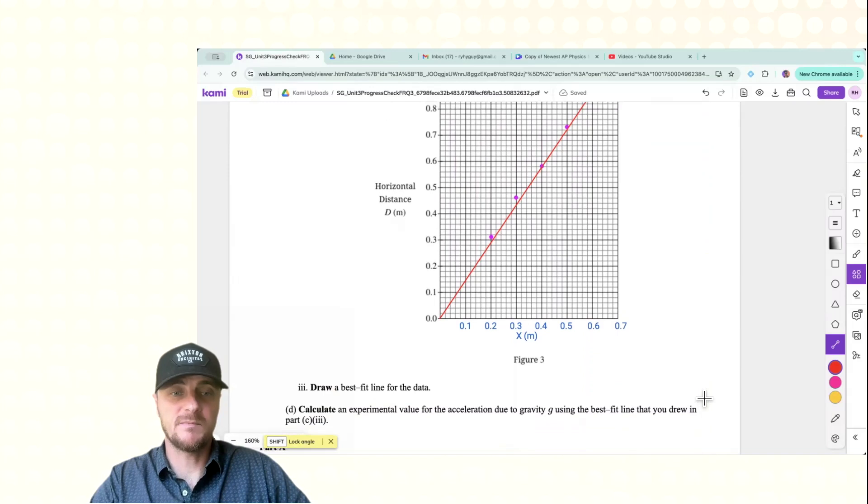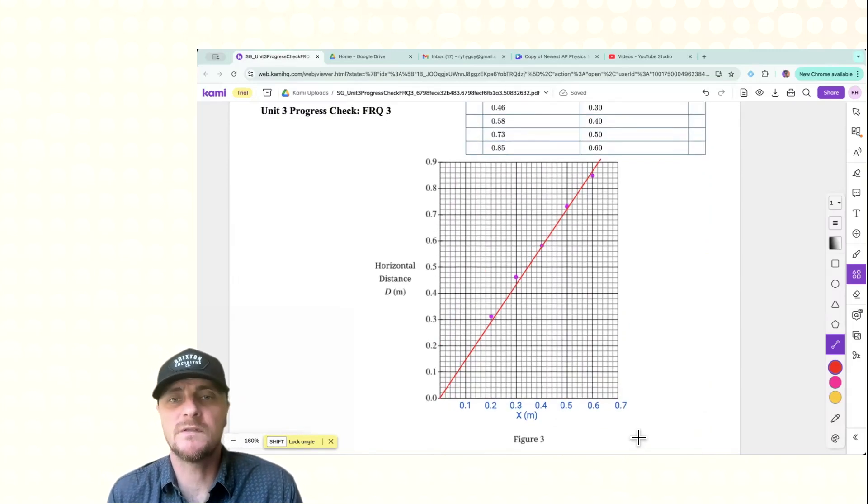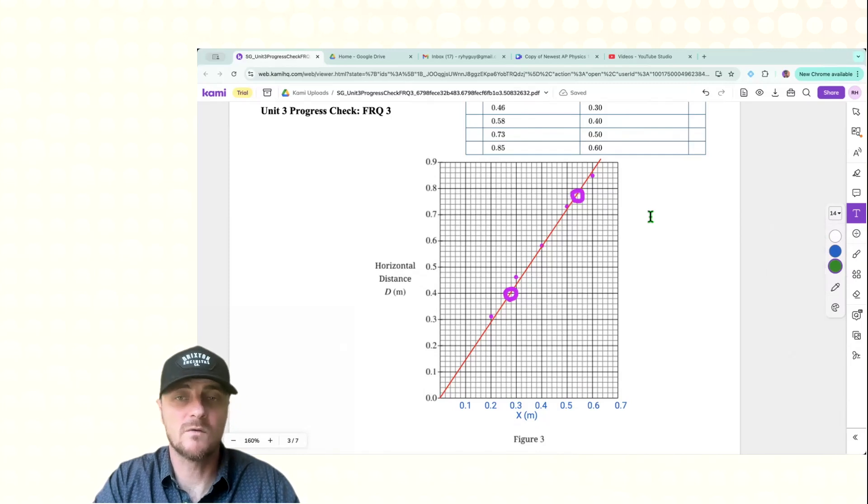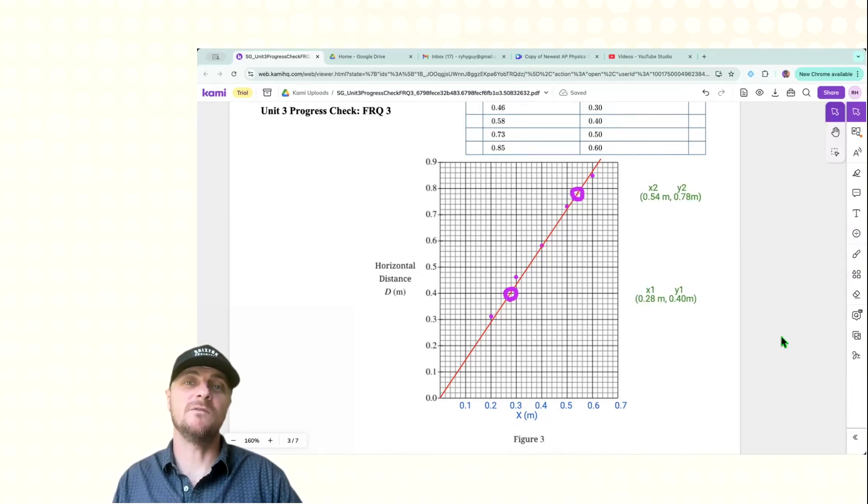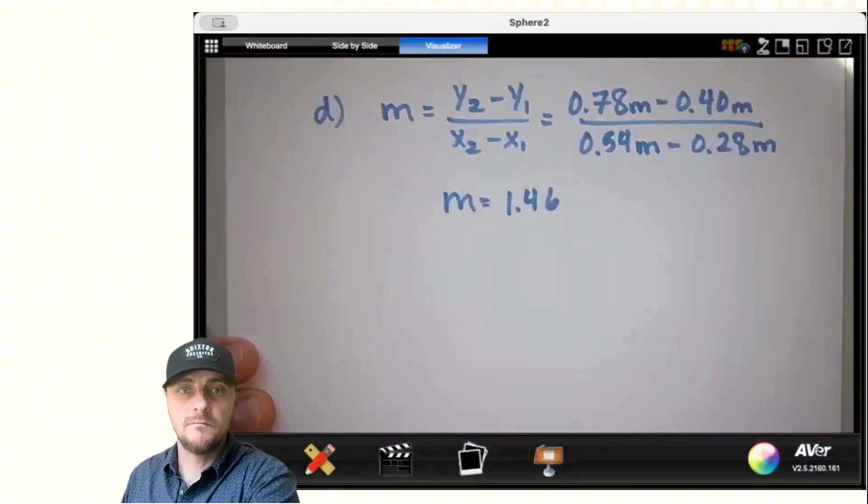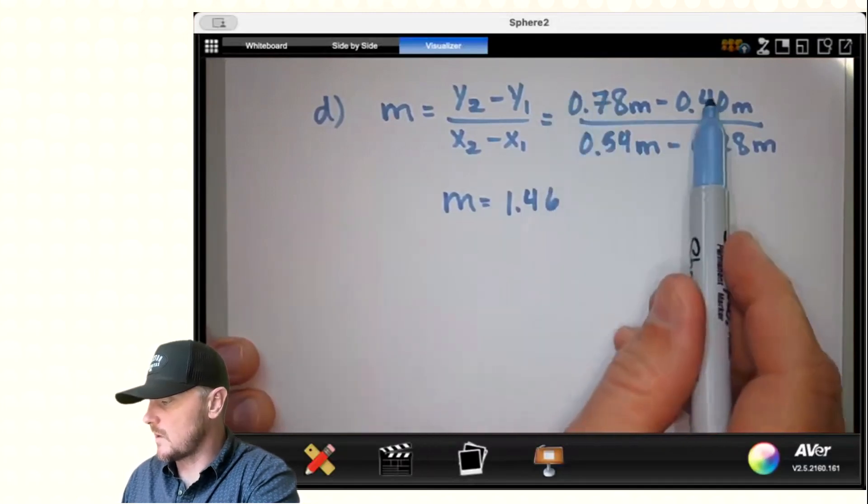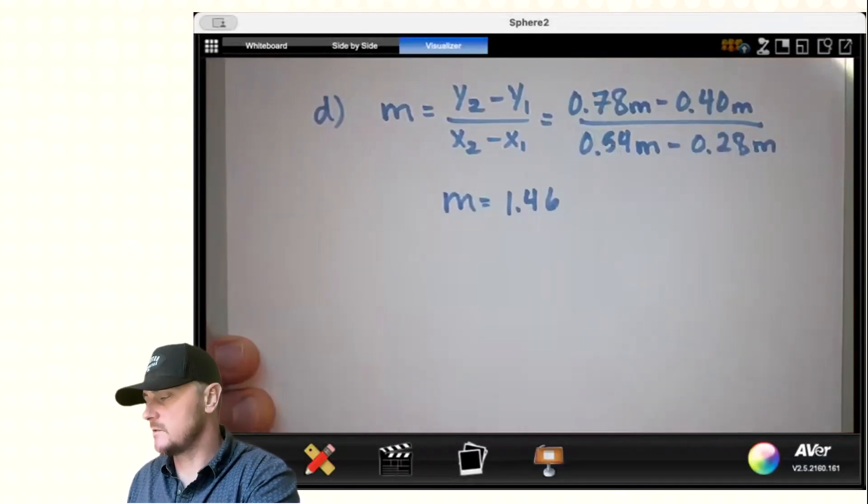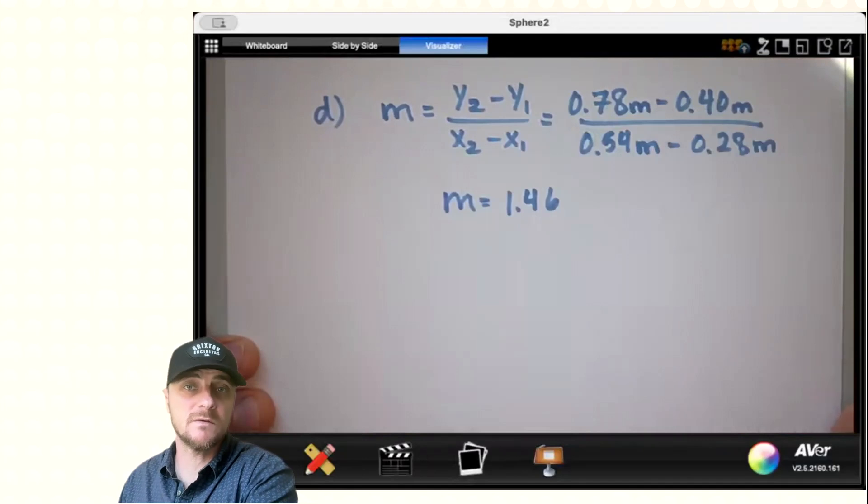Let's go on to part D. Calculate an experimental value for the acceleration due to gravity G using the best fit line that you drew in part C3. So again, what we're looking for here are perfect intersection points with the graph paper. And I see one right there. So I'm going to circle that real fast. And I found another one right here. So I'm going to write out those coordinates. And those are my two sets of coordinates. So all I have to do now is calculate slope doing y2 minus y1 over x2 minus x1. All right, there's my calculation of those coordinates, y2 minus y1 over x2 minus x1, giving me a slope of 1.46.